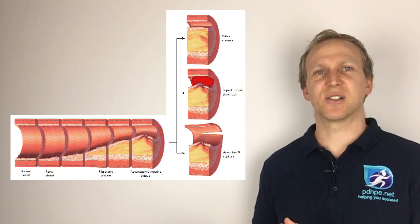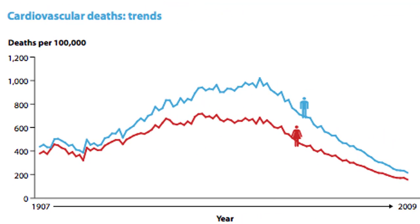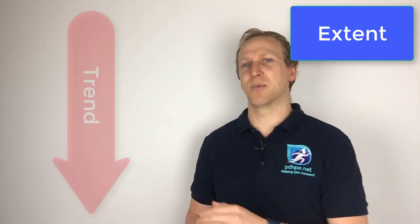Looking at the extent of cardiovascular disease in Australia: it used to be the number one cause of death and the number one cause of burden of disease, but that has now been taken over by cancer, so cardiovascular disease sits at number two. Having said that, still one in five Australians have cardiovascular disease, there are over a million hospitalizations for it, and it accounts for about 30% of deaths. As you can see on this graph, there has been a massive decline — so the trend for cardiovascular disease is downward.